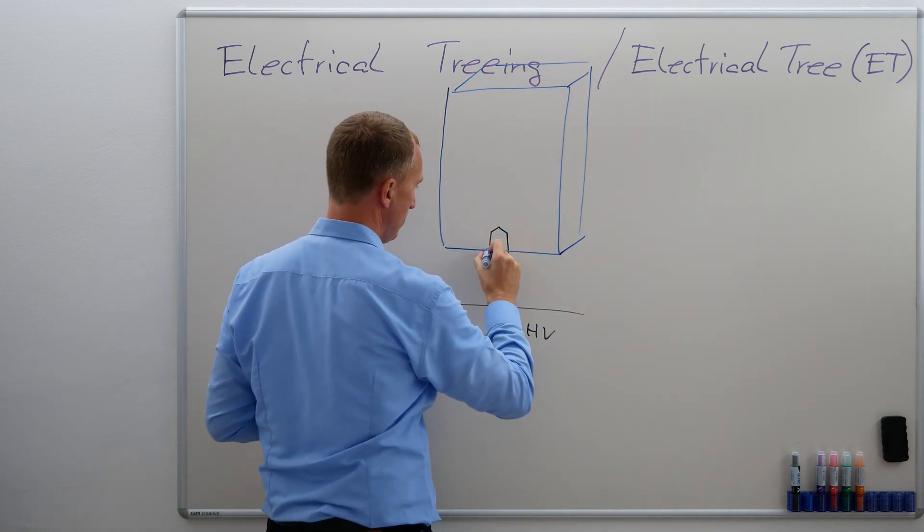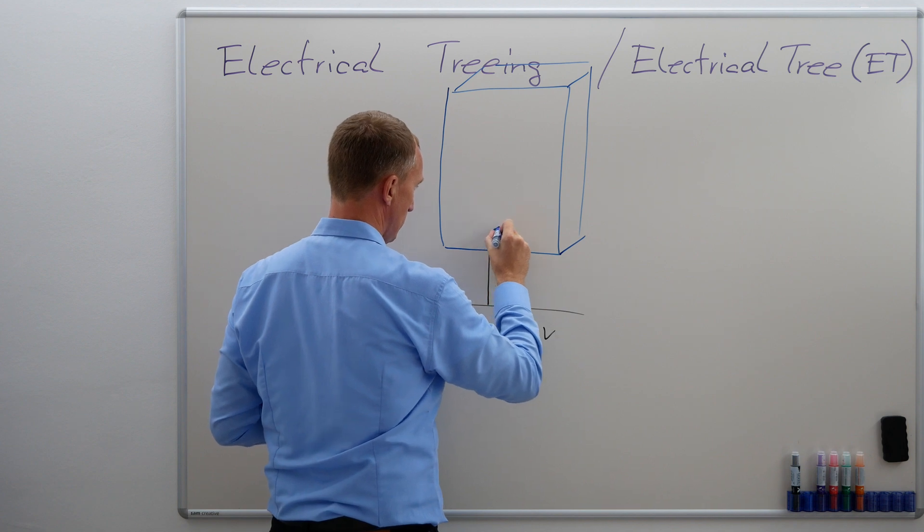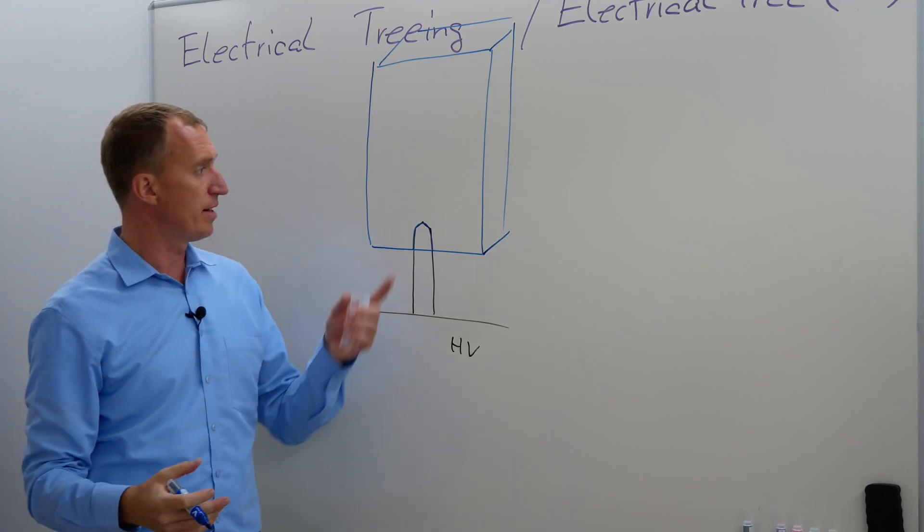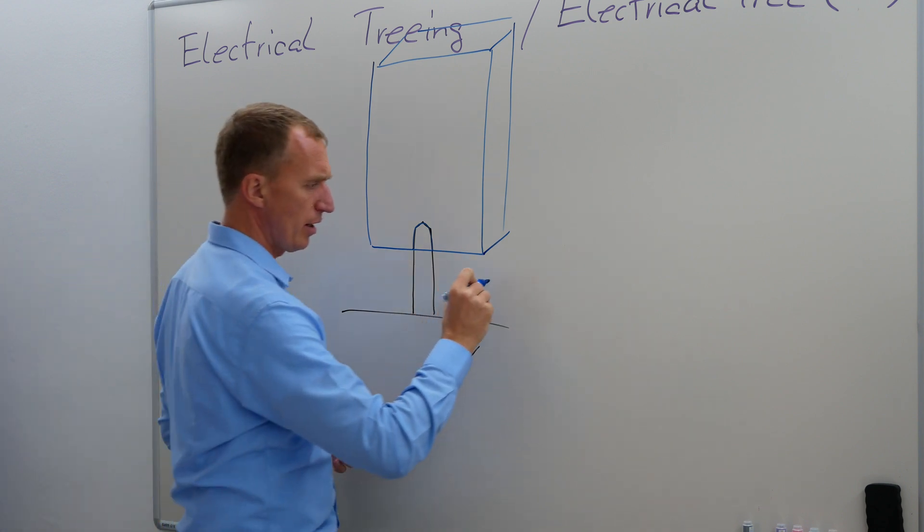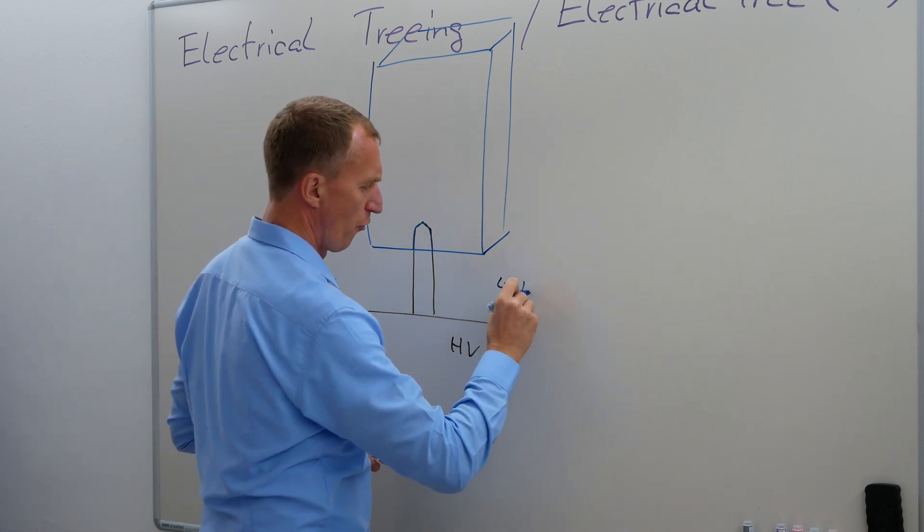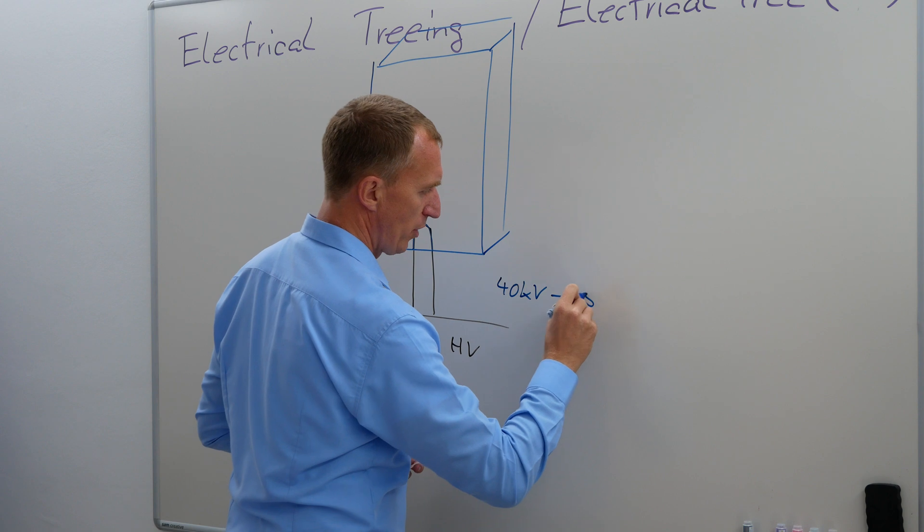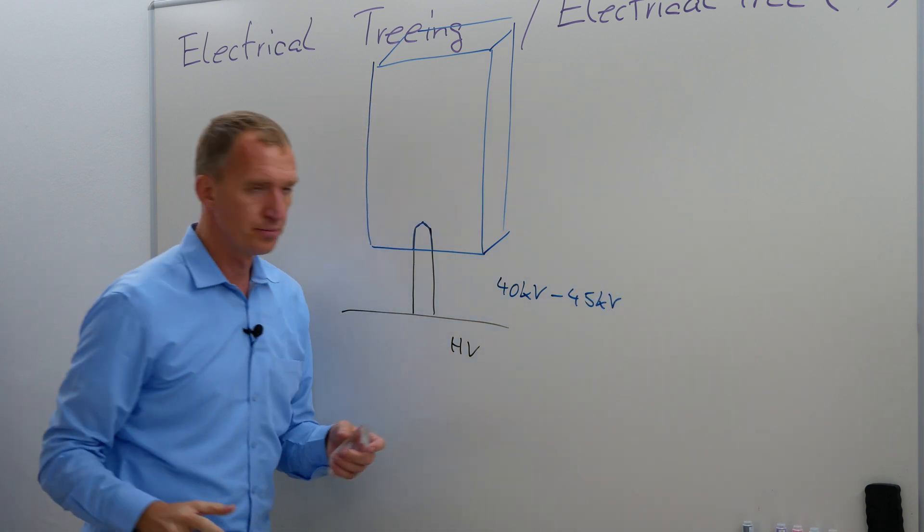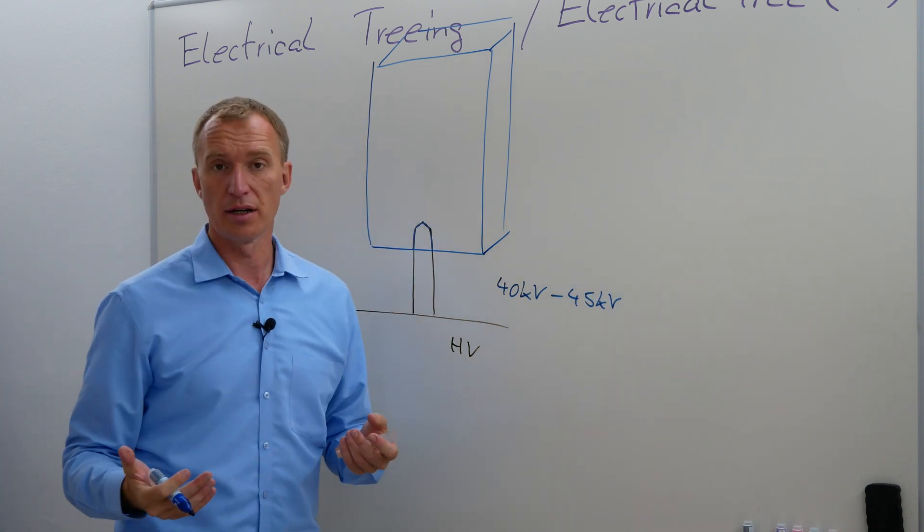And we had a hole drilled in here, looked a little bit like that. And we put the nail in. And then we put something, I remember correctly, something between 40 and 45 kV in there.